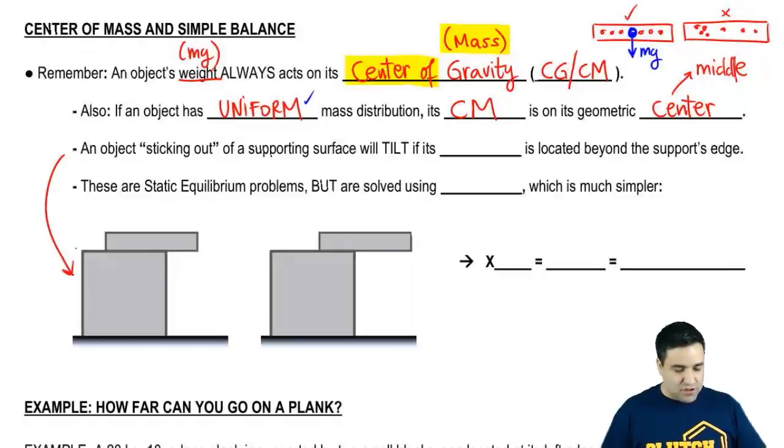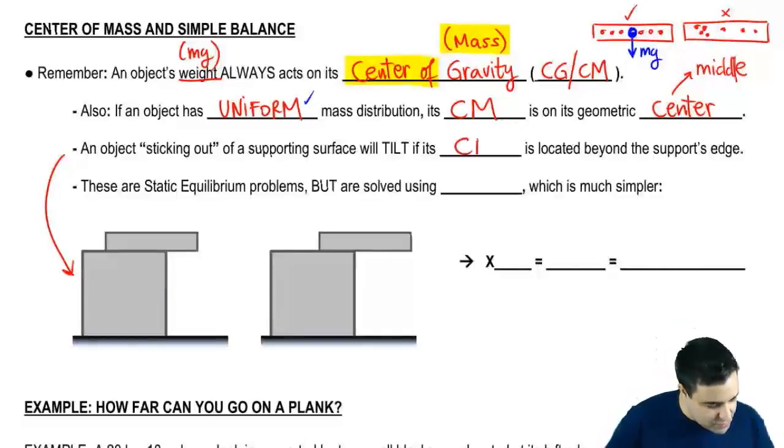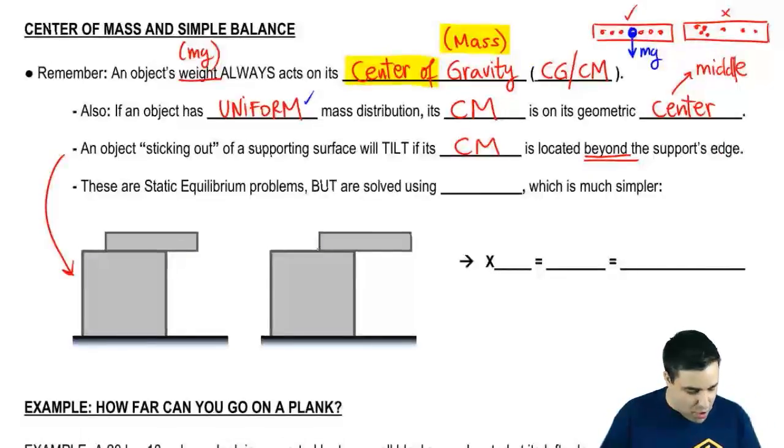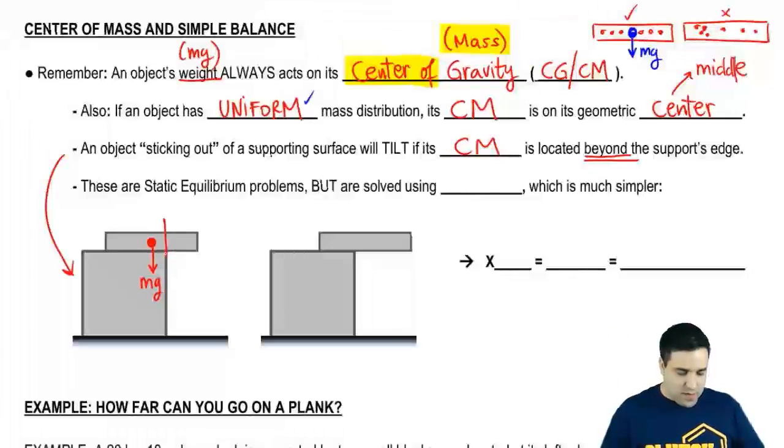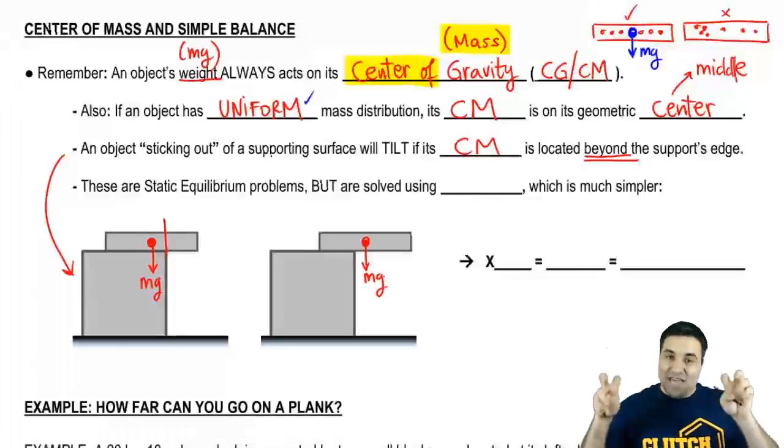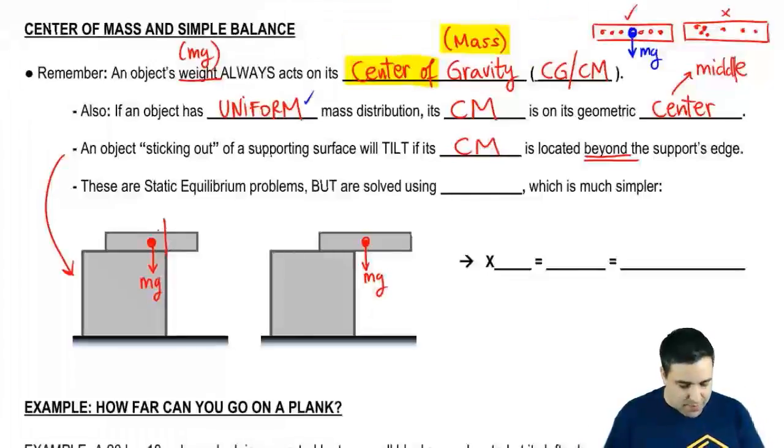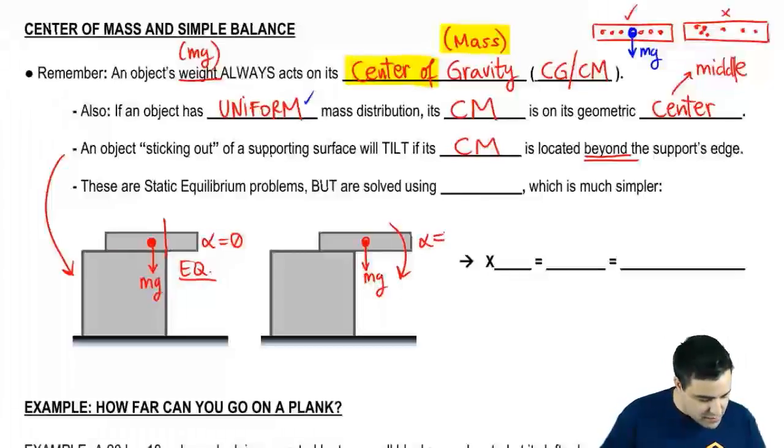If you have an object sticking out of a surface like this, it will tilt if its center of mass is located beyond the support's edge. So that's two situations here. I got the same bar on two desks, but this one is located here. The center of mass is within the table. In this case, it's right down the middle. And then here it is beyond the table. What that means is that here the object will not tilt. You can try this at home. But the acceleration will be zero. So there's, and this is at equilibrium. It won't tilt. Here the object will tilt. There will be an acceleration that is not zero. And this is not equilibrium.